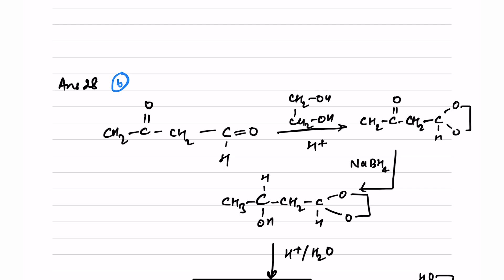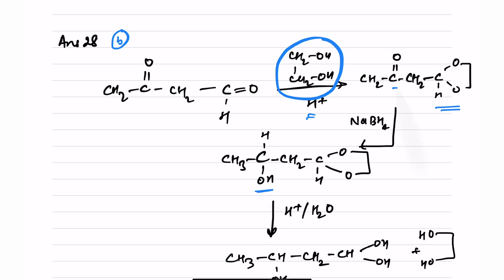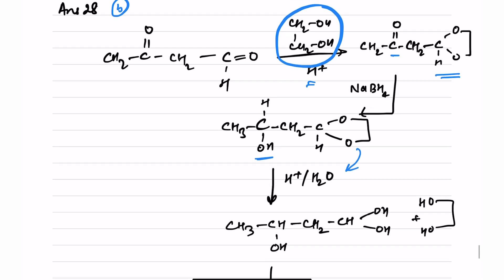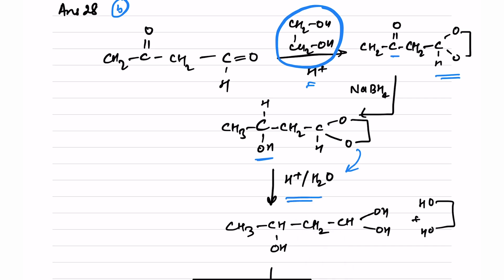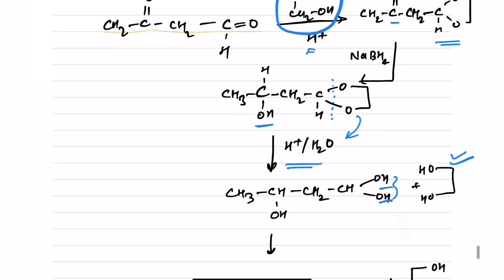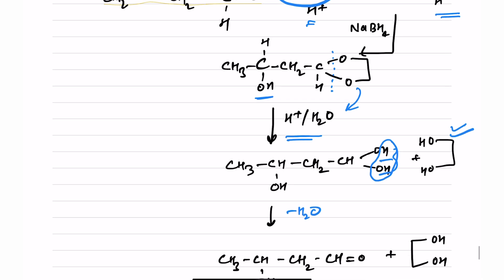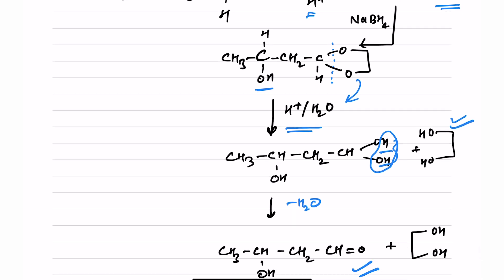The acetal/ketal reaction is used to protect the aldehyde group. Using CH2OH and H+, the aldehyde forms its respective acetal (protected). Then the ketone is reduced to alcohol by the reducing agent. To retrieve the aldehyde back, acidified hydrolysis cleaves the ether — OH groups are formed, recovering the CH2OH and giving a geminal diol, which loses H2O to regenerate the aldehyde. So the answer is option B.